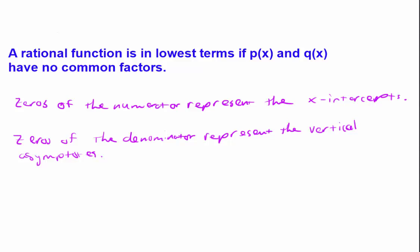The vertical asymptotes are where the function is undefined for that particular x-value. In the graph, you'll have a vertical asymptote where the graph gets closer and closer to that line but never crosses and never touches it — from both sides. It's always a vertical line, and it's called the vertical asymptote. It's very important to graphing rational functions.